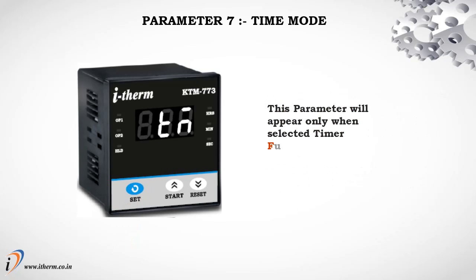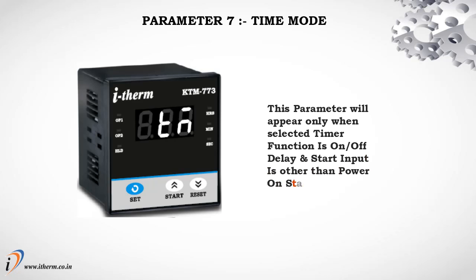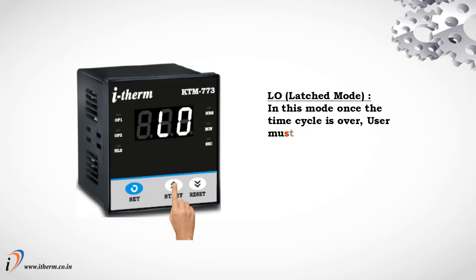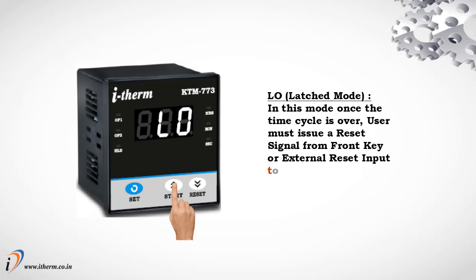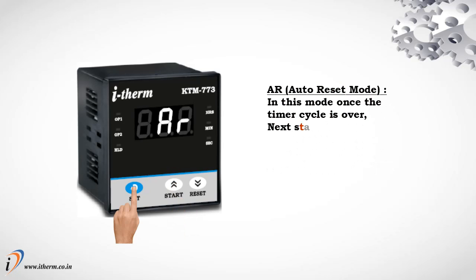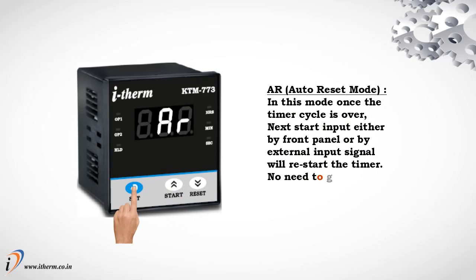Parameter 7: Time Mode. This parameter will appear only when the selected timer function is on delay or off delay and start input is other than power on start. Latched Mode: once the time cycle is over, the user must issue a reset signal from the front key or external reset input to restart the timer. Auto Reset Mode: once the timer cycle is over, the next start input — either by front panel or external input signal — will restart the timer. No need to give a reset signal.